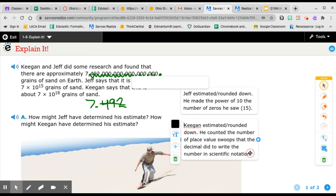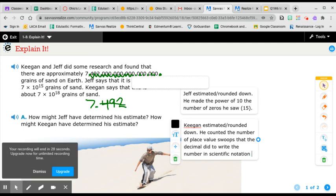Right? So I should put that he made that the power of 10. That's more specific. And that was 18. So the exponent was 18 for Keegan. And Keegan was right.